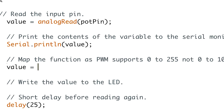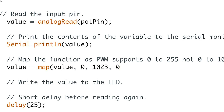To do this, insert: value equals map(value, 0, 1023, 0, 255). The code we just wrote will convert our potentiometer values, which have a range of 0 to 1023, to PWM values in the range of 0 to 255.